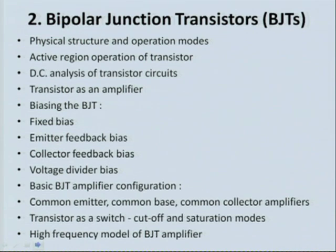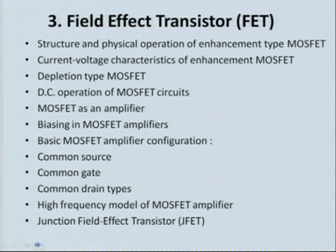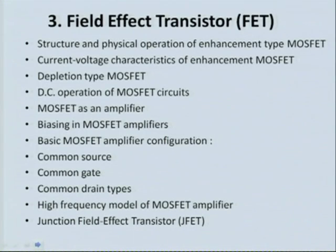We will also discuss the operation of the transistor under high frequency — when you operate a transistor under high frequency, how the frequency effects come into the picture and affect the transistor's operation. Similarly, next we will discuss field effect transistors — first the structure and physical operation of FET, like enhancement type MOSFET, then VI characteristics of MOSFET. Then MOSFET when used as an amplifier, and biasing of MOSFET amplifiers — common gate, common source, etc. High frequency operation of the MOSFET amplifier and also JFET — junction field effect transistor — will also be discussed.